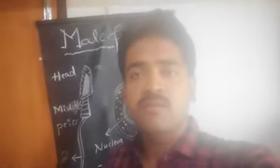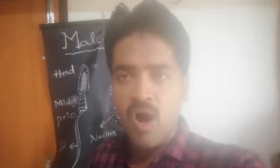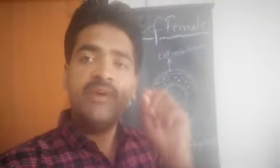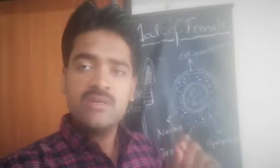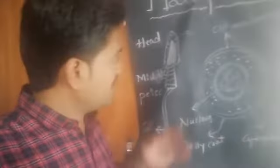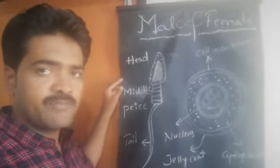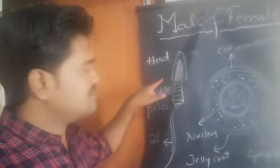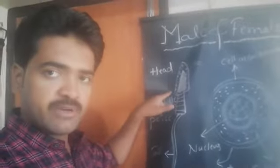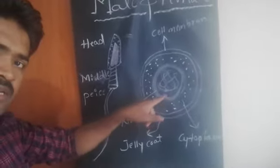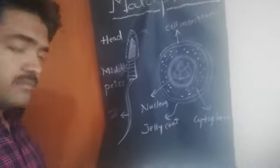In the man we can see the male sex cells, those are called the sperms, and female sex cells are called the egg or ova. I have drawn the diagram of both male and female sex cells. This is the male sex cell called the sperm, and this is the female sex cell called the egg or ova.